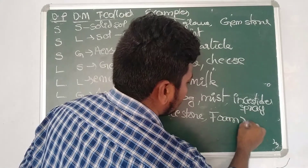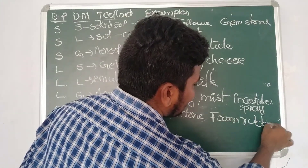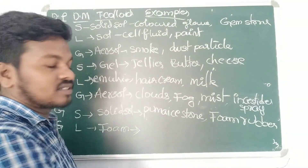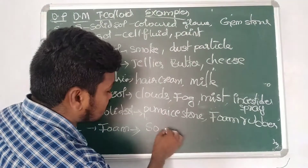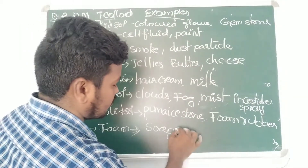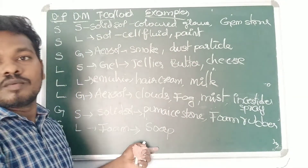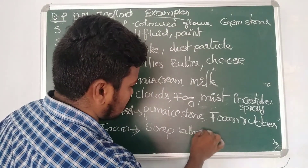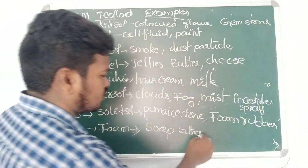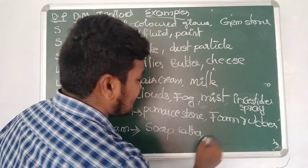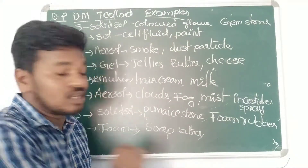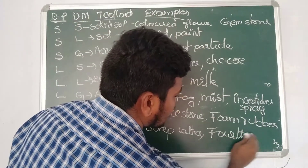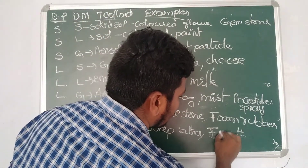He wants to clean himself, so he goes to the restroom. He cleans using soap — soap lather. By using soap lather he tries to clean. Finally the fourth time he rubbed — you can make that into 'froth.' The fourth time rubbing gives us froth as an example.